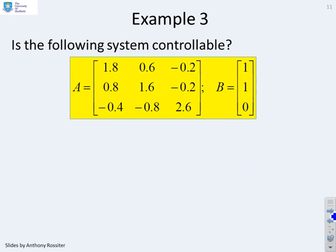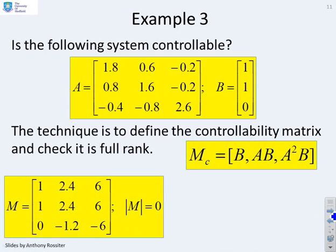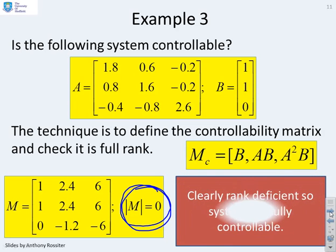Third example. Is the following system controllable? So once again, I define my controllability matrix M_c equals [B, AB, A²B]. I plug in the numbers. And now I find that the determinant is zero. And because the determinant is zero, so M is rank deficient, therefore the system is not fully controllable.